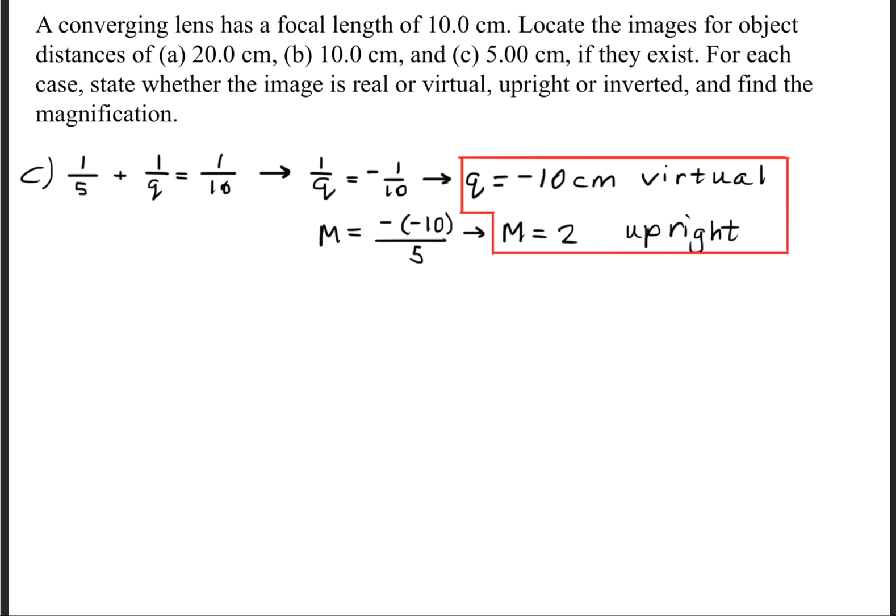So because the image is negative, it has that negative sign convention, it is a virtual image. And because the magnification is a positive two value, it's going to be upright.